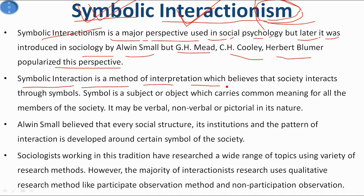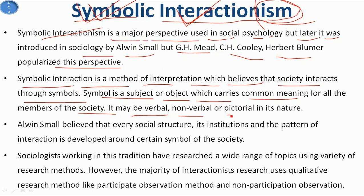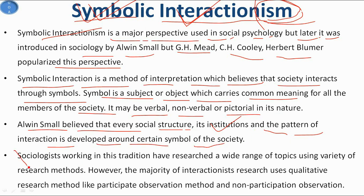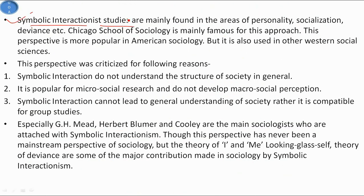Symbolic interactionism is a method of interpretation which believes that society interacts through symbols. A symbol is a subject or object which carries common meaning for all members of society — it may be verbal, non-verbal, or pictorial. Every social structure, its institutions like family and marriage, and the pattern of interaction is developed around certain symbols. The majority of interactionist research uses qualitative methods like participant observation. The Chicago School of Sociology is mainly famous for this approach.